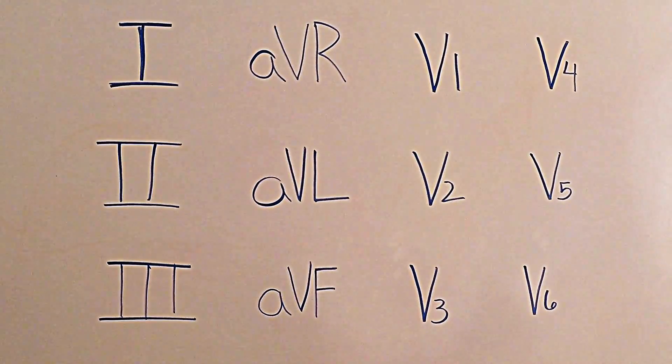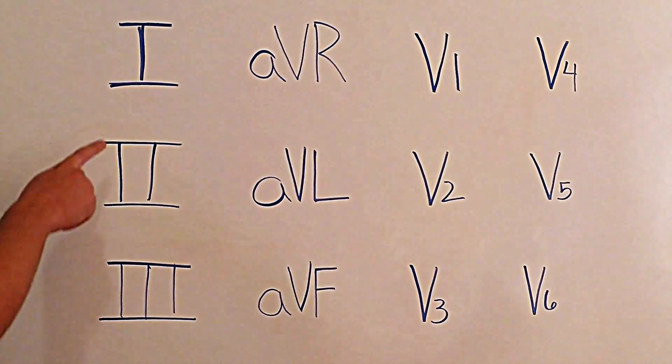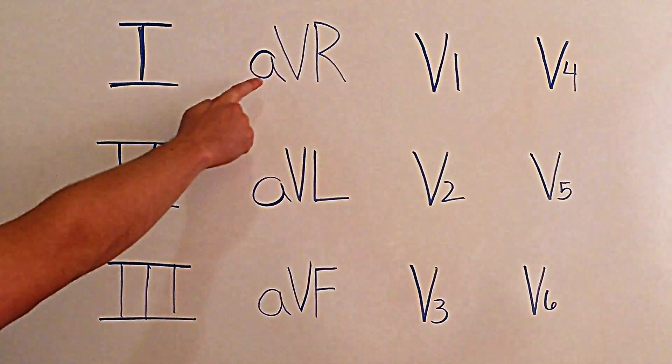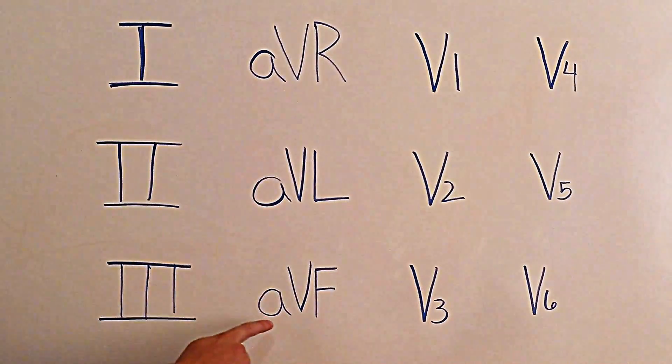First thing I need you to do is grab a piece of paper. Now if you've got your paper, I want you to write out exactly what I have written out on this diagram. I want you to start with I, II, III, then you go to aVR, aVL, aVF, and then V1 through V6 in this order.